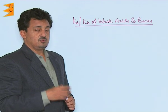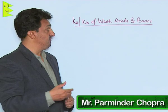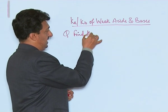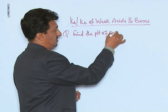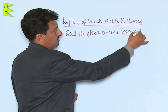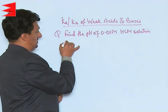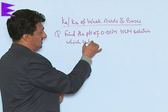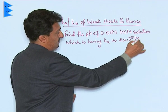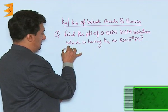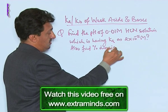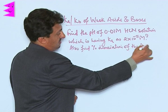Now, let us do a numerical to find out the dissociation of the weak acid in water and its pH. The numerical is: find the pH of 0.01 molar HCN solution, which has a dissociation constant of 2 into 10 to the power minus 5 molar. Also find the percentage dissociation of the acid.